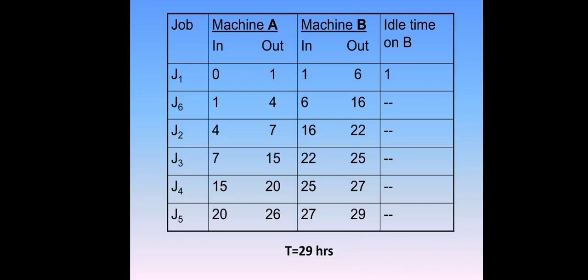J2 starts at time in 4, with processing time 3, so 4 plus 3 equals 7. J3 starts from 7, processing time is 8, so time out is 15 hours. J4 starts from 15, duration is 5 hours, so time out is 20 hours. J5 starts from 20 hours, duration is 6 hours, so time out is 26 hours.